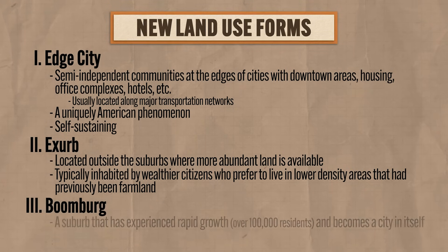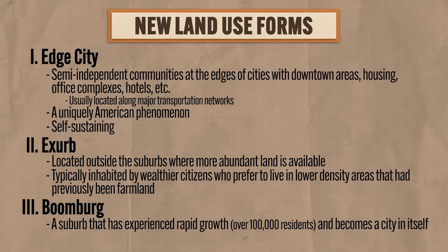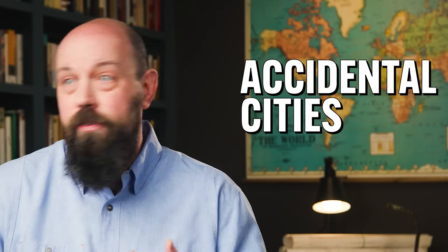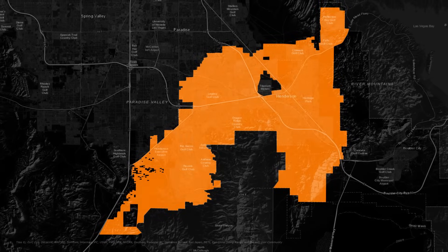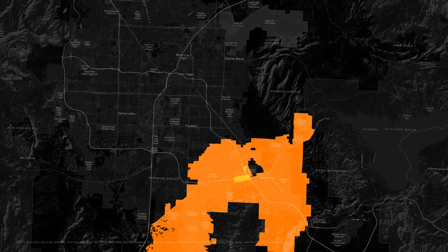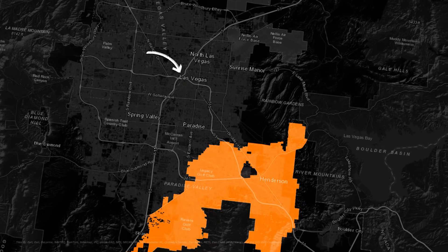Third is the boomburg, which refers to a suburb that has experienced rapid growth — over 100,000 residents — and becomes a city in and of itself. These are often known as accidental cities because they gained urban status without ever intending to. However, they are made up of intentionally planned communities that have merged together as they have grown. A good example is Henderson, Nevada, which is America's fastest growing boomburg. Like all other boomburgs, it's located along major transportation routes connecting it to a major city — in this case Las Vegas — so that people who can't afford to live in Vegas can still easily get to work. As urban areas have grown in the last century, new ways of using land to accommodate people's life, work, and play have grown along with them.